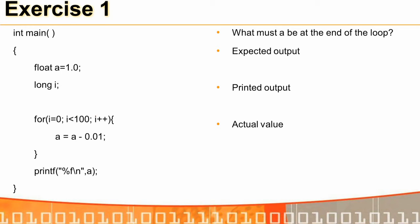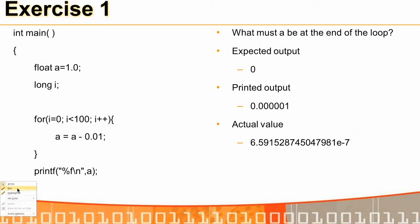Consider this experiment: start with A=1.0 (single precision float), subtract 0.01 in a loop 100 times. The expected output is 0. But the printed output is 0.0000001, and the actual value stored in memory is approximately 6.591 × 10⁻⁷. So the mathematically correct answer is not what the computer stores, and printf does not print the stored value exactly either.